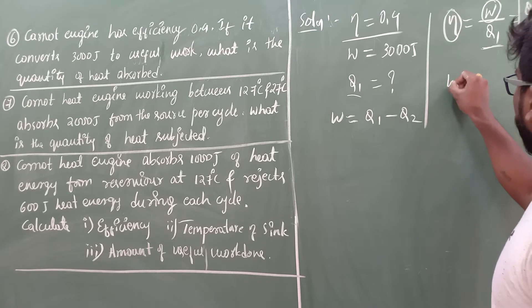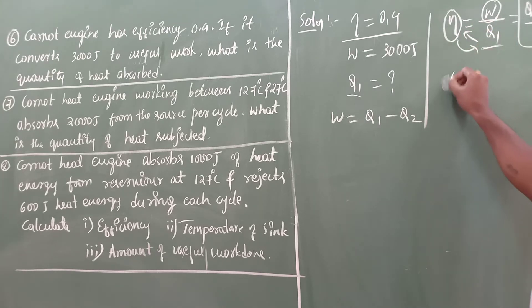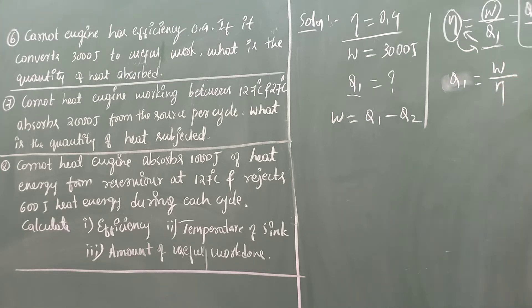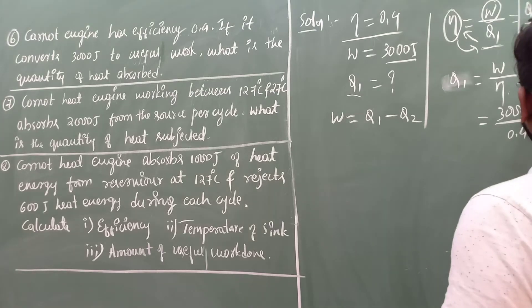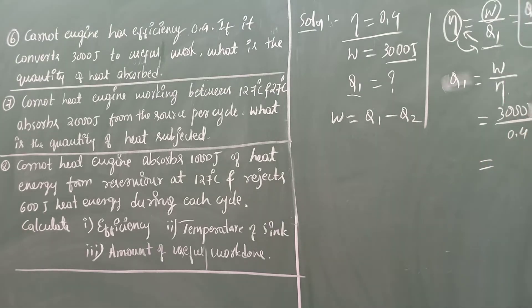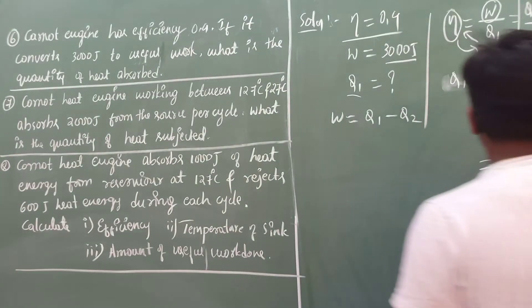Rearranging the efficiency formula, Q1 equals W divided by eta. Substituting the values: W is 3000 Joules and eta is 0.4, so Q1 equals 3000 divided by 0.4.